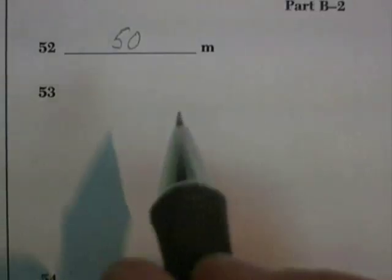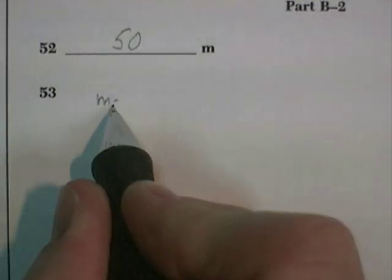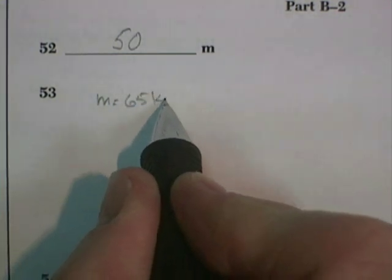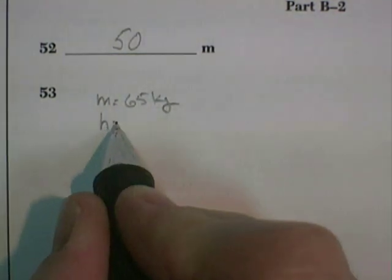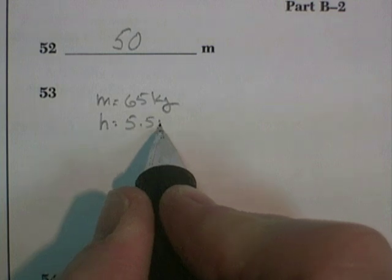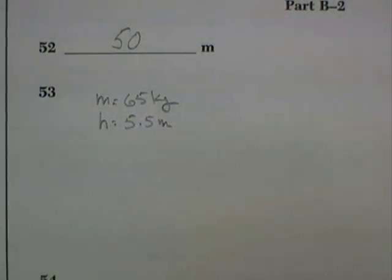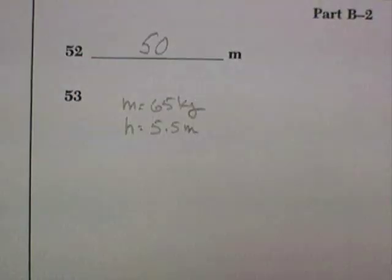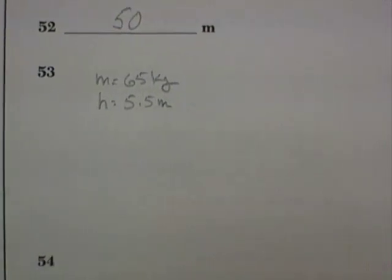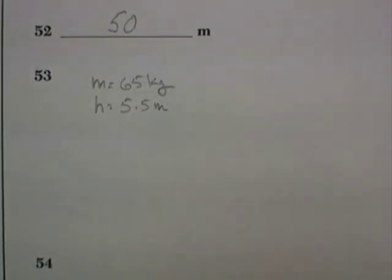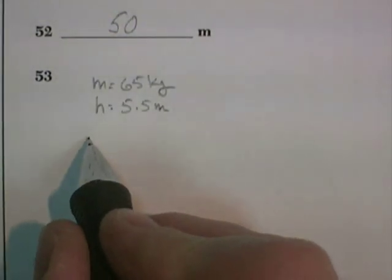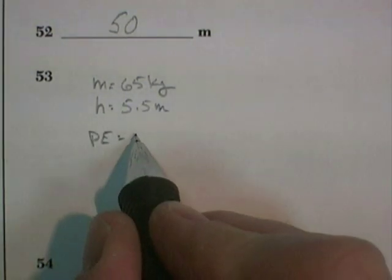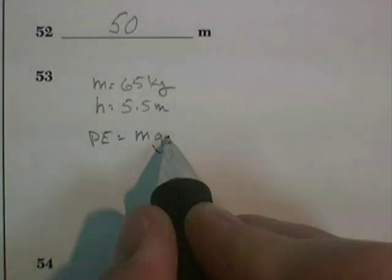This is an equation of energy transfer. Mass is 65 kilograms, going to a height of 5.5 meters. Well, in this particular problem, he must gain a potential energy to reach that height. And potential energy is equal to M times G times H,